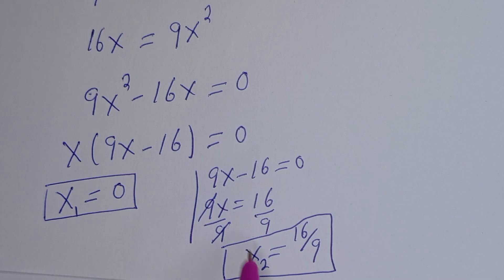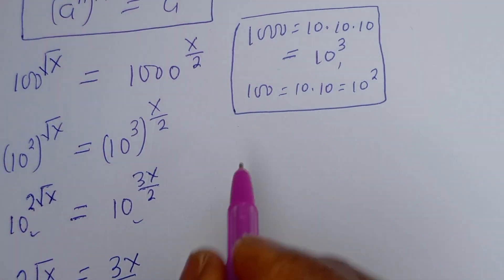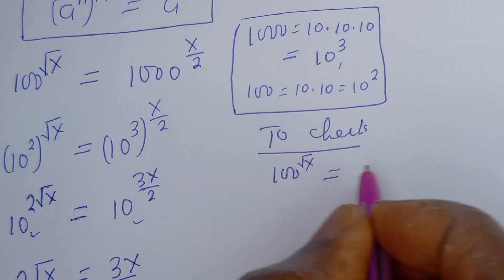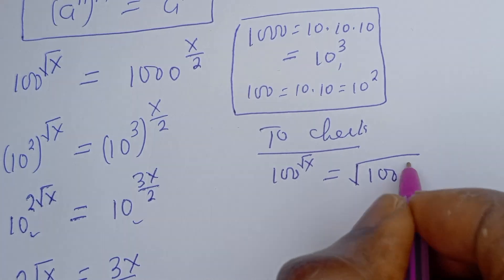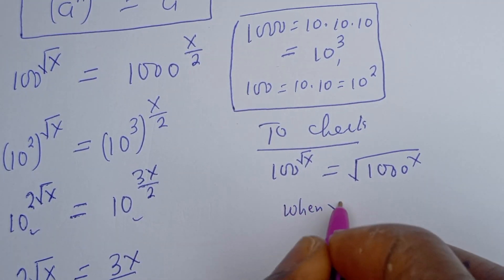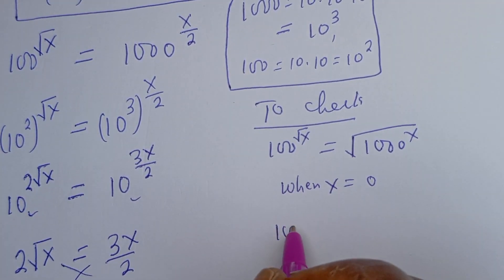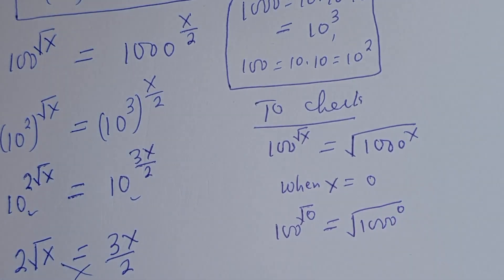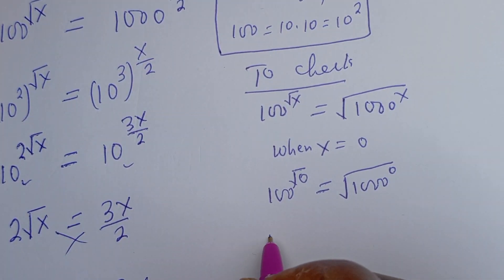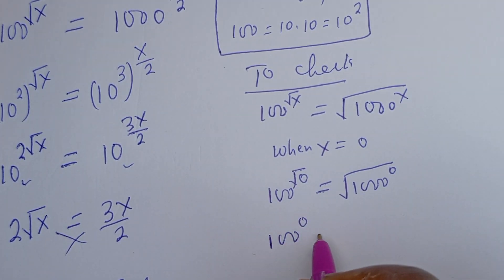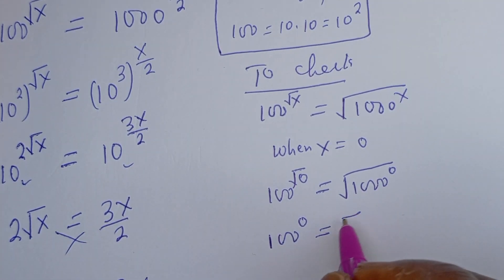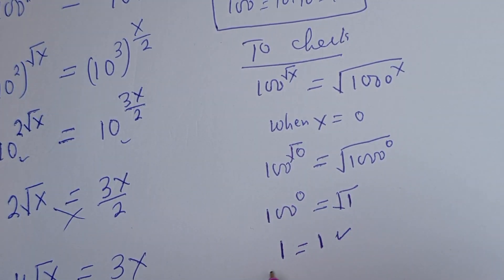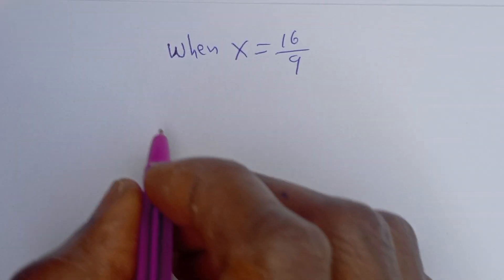Let's call these s1 equals 0 and s2 equals 16 over 9. To confirm, let's check by substituting back into the original equation: 100 to the power of root s equals square root of 1000 to the power of s. When s equals 0, this gives 100 to the power of 0 equals square root of 1, which is 1 equals 1. This is true.